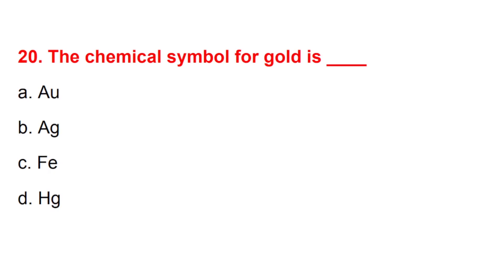Question 20. The chemical symbol for gold is? Correct answer is option A: Au.